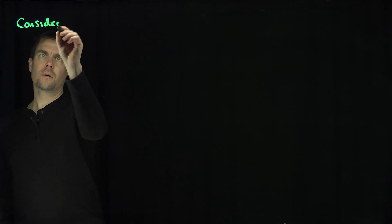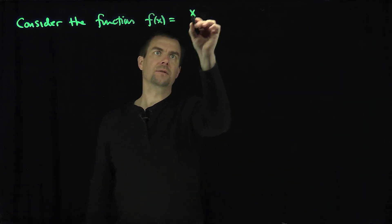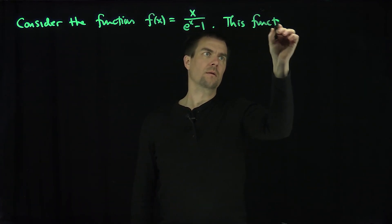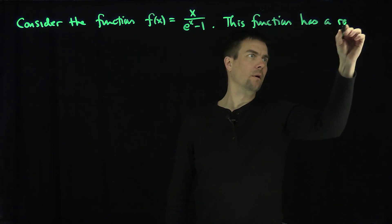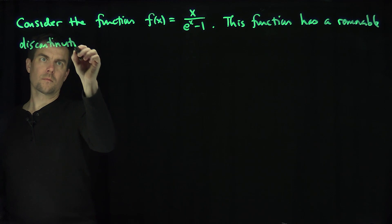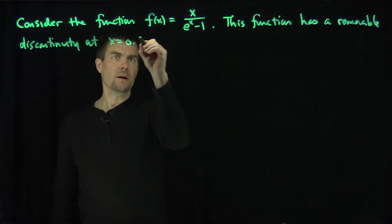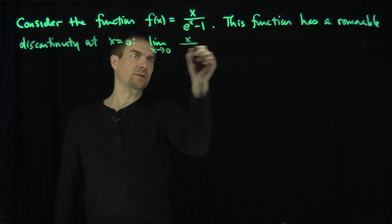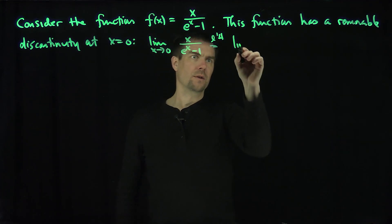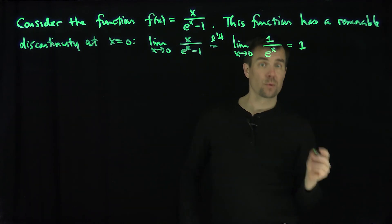Consider the function f(x) = x over e to the x minus 1. This function has a removable discontinuity at x equals 0, as we can see by taking the limit as x goes to 0. The limit gives 0 over 0, so we apply L'Hôpital's rule. By L'Hôpital's rule, this becomes the limit as x goes to 0 of 1 over e to the x, which equals 1. So this function equals 1 at x = 0.